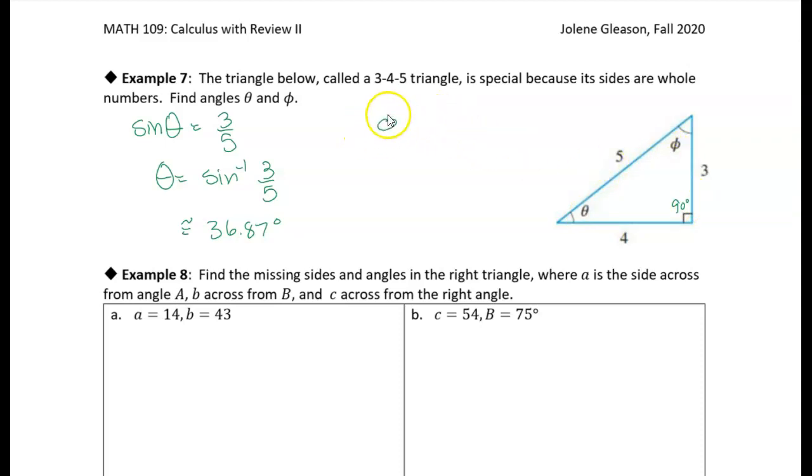So phi equals 90 degrees minus the angle we just found, which is 36.87 degrees. That gives us 53.13 degrees.